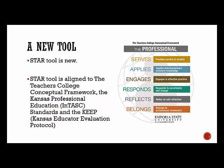The STAR tool is aligned to a number of items. First, the Teachers College Conceptual Framework, and you will see that framework to the right on your screen. The framework consists of six proficiencies that the candidate is expected to be competent at at the point of graduation, and then of course continue their growth through their in-service career. These include providing service to society, applying interdisciplinary scholarly knowledge, engaging in effective practice, responding to uncertainty and change, relying on self-reflection, and belonging to professional community. As you look at the evaluation tool, you will see these themes pop up in several different areas throughout the evaluation criteria.